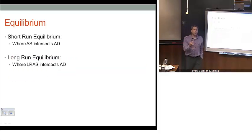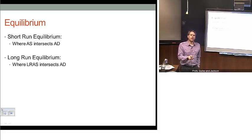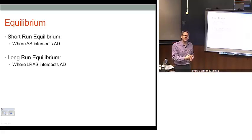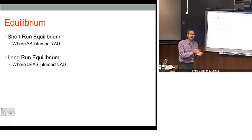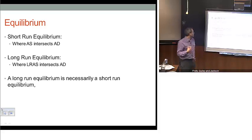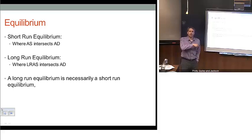Just like our notion of a short-run and a long-run aggregate supply curve, that's also going to lend itself to a split notion of what an equilibrium looks like. We can have a short-run equilibrium where the aggregate demand curve intersects the short-run aggregate supply curve. We can also have a long-run equilibrium, which is where our aggregate demand curve intersects the long-run aggregate supply curve. A long-run equilibrium has to be a short-run equilibrium, but not necessarily the reverse.